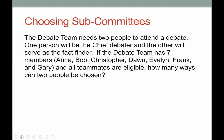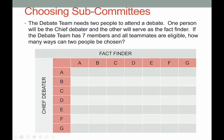The debate team needs two people to attend a debate. One person is the chief debater and the other is the fact finder. If the debate team has seven members — Anna, Bob, Christopher, Dawn, Evelyn, Frank, and Gary — and all of the teammates are eligible to participate, how many ways can two people be chosen? We're going to represent all the possible outcomes in a product table, which I have set up here. We have our chief debater as the rows and the fact finder as the columns, and we're going to fill in the table accordingly.